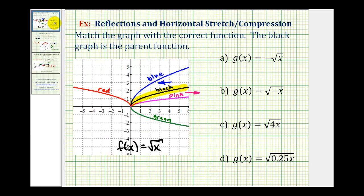Going back to our example, let's start with the reflections across the x and y axis, which we should recognize would be function a or function b. Looking at b first: if g of x equals the square root of negative x, we're changing the sign of the x coordinates, which means it would reflect the black graph across the y-axis. So b would be the red graph. Therefore, for g of x equals negative square root of x, we'd be changing the function values — the y values — so it's going to reflect the black graph across the x-axis. The graph of this function would be the green graph.